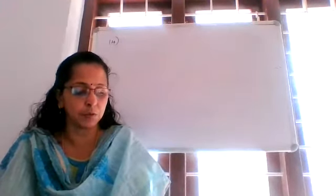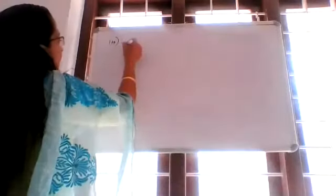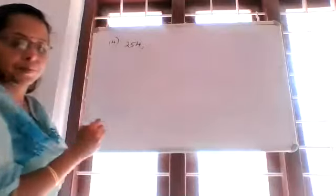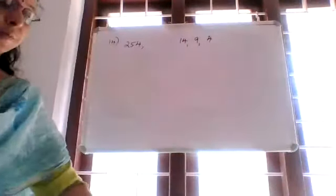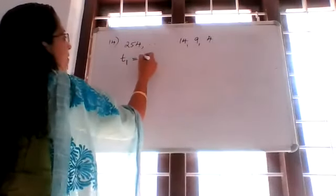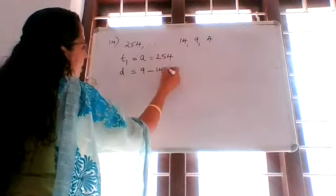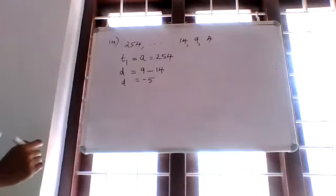Question number 14: Find the 10th term from the end of the AP: 4, 9, 14, ..., 254. Changing the order of the sequence, we get the sequence as 254, ... The common difference is 9 minus 14 equals negative 5, so D is equal to negative 5. T1 equals A equals 254.